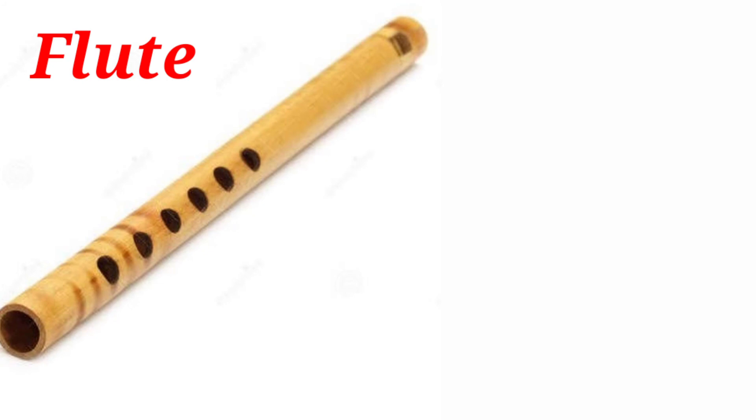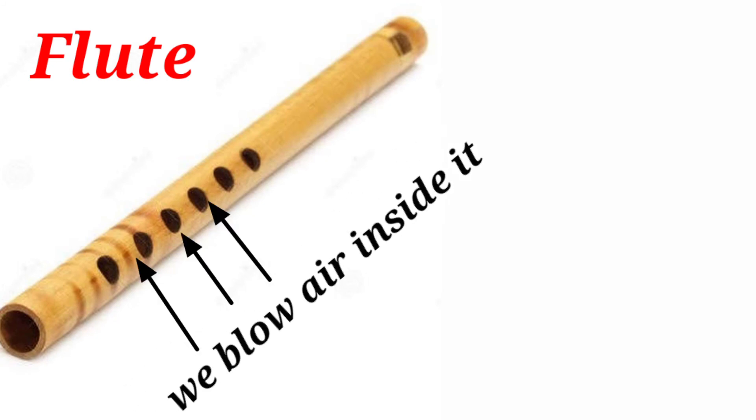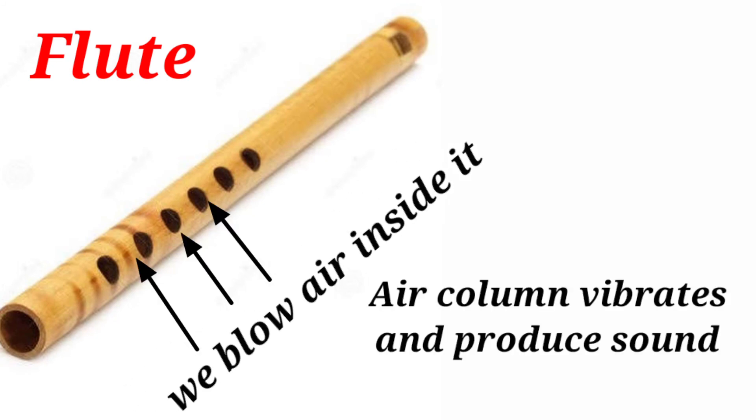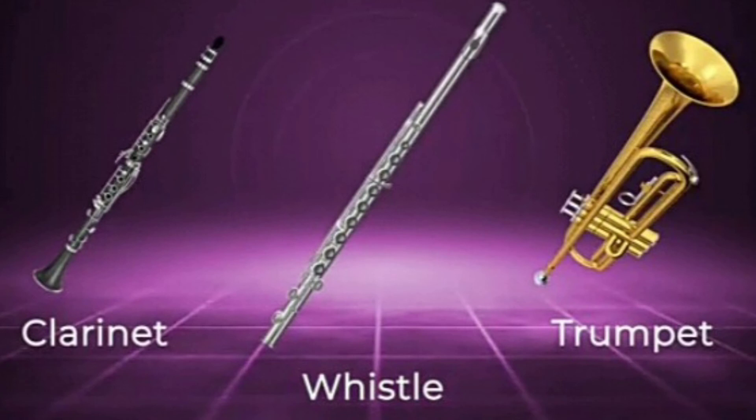Flute. In flute, you blow air inside it, and when we blow air, the air column starts to vibrate and makes sound. So air column-type instruments are flute, clarinet, whistle, and trumpet. These are some examples of musical instruments that show how sound is produced in different musical instruments.